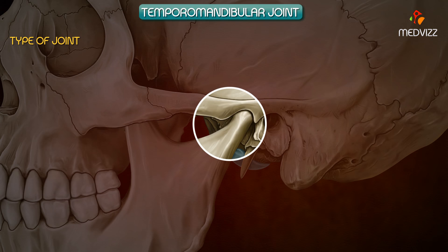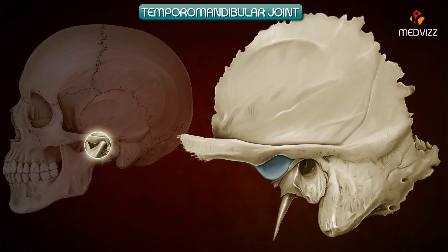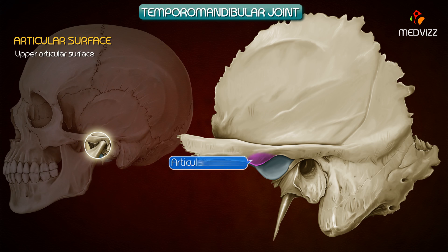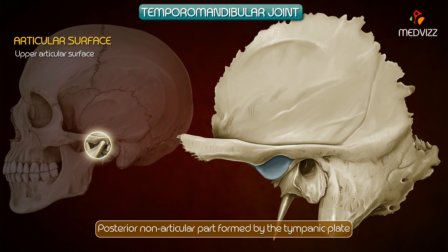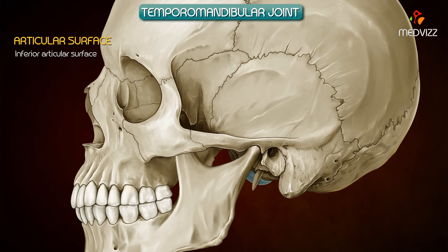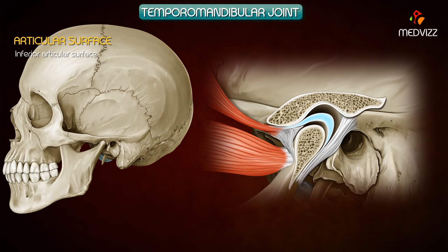The temporomandibular joint is a synovial type of joint of condylar variety. The upper articular surface is formed by parts of the temporal bone — the articular tubercle, the anterior part of the mandibular fossa, and the posterior non-articular part formed by the tympanic plate. The inferior articular surface is formed by the head of the mandible. The articular surfaces are covered with fibrocartilage.